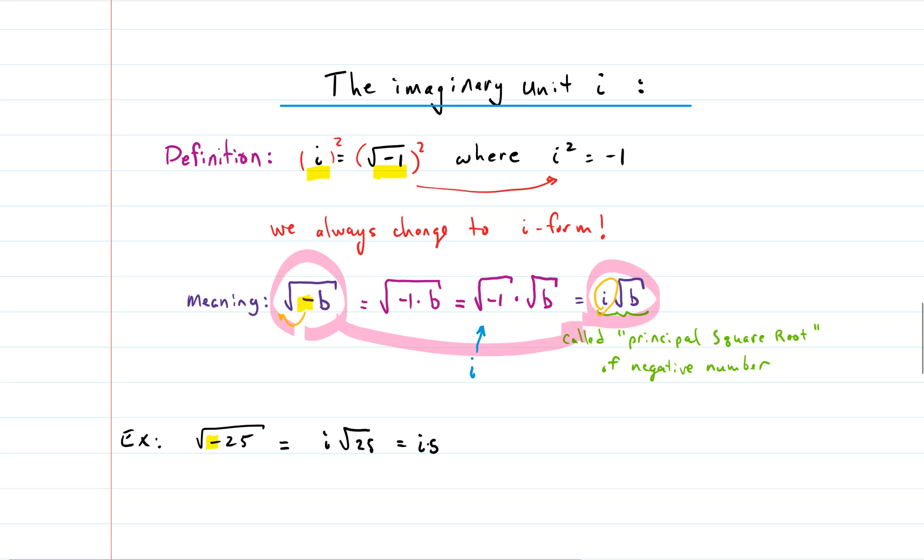And I have the square root of 25. Square root of 25 is 5. Convention says that the i, if it's with just a normal number not a radical, goes to the right. So we'll do that. So the square root of negative 25 is just 5i.